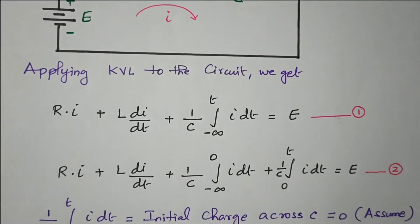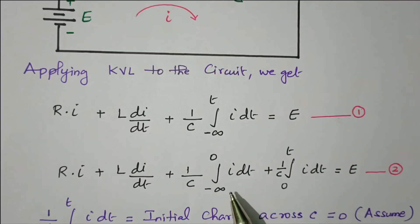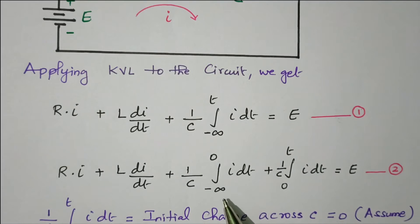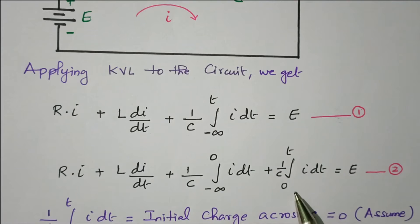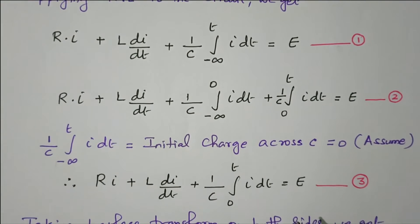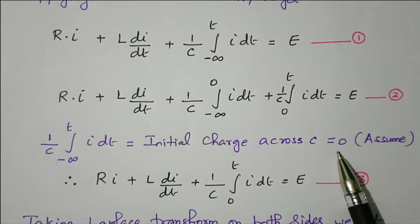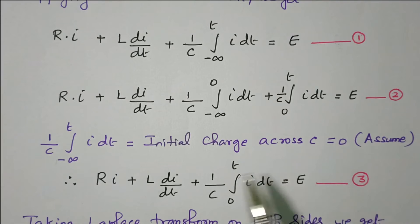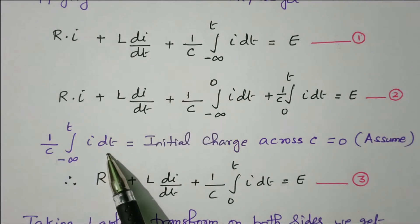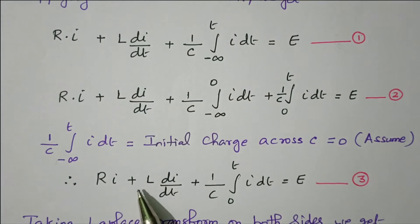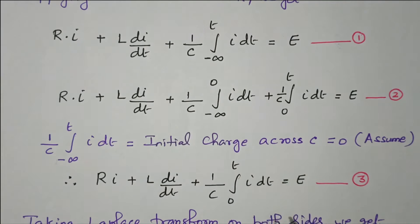Now we will split the limit of the integral from −∞ to T into two parts: −∞ to 0 and 0 to T. The first part represents the initial condition before switching. The term (1/C)·∫(−∞ to 0) i dt represents the initial charge across the capacitor, which is assumed to be zero — there is no initial charge. So that term becomes zero, and we are left with R·i + L·di/dt + (1/C)·∫(0 to T) i dt = E. This is equation number 3.